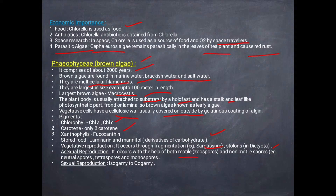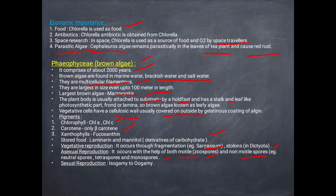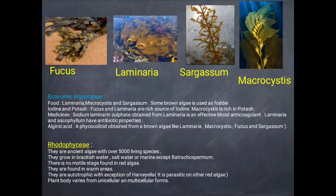Pigments in brown algae are chlorophyll A, chlorophyll C, beta-carotene, and fucoxanthin. Stored food is in the form of laminarin and mannitol. Vegetative reproduction occurs by fragmentation in Sargassum and stolons in Dictyota. Asexual reproduction is by both motile and non-motile spores. Sexual reproduction is by isogamy, anisogamy, and oogamy.